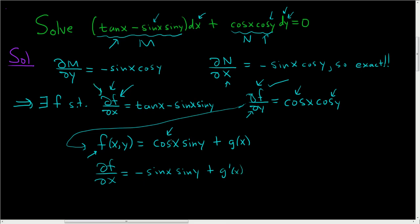So in order to use this, we have to set this equal to all of this. So this is tan X minus sine X sine Y. And these guys are exactly the same, so they cancel. You can just add them to both sides. And so you have little g prime of X is equal to the tangent of X.